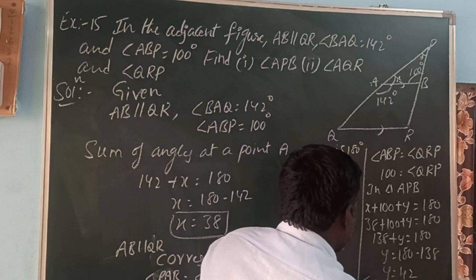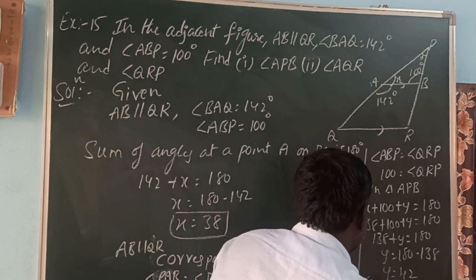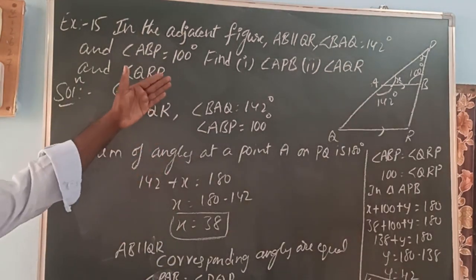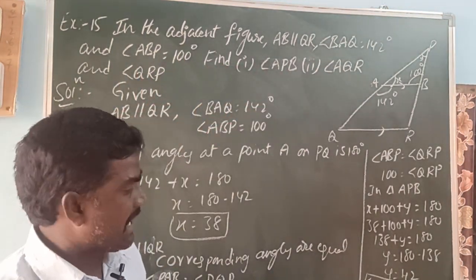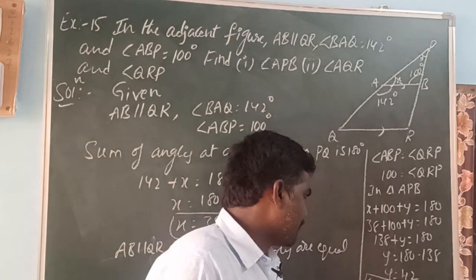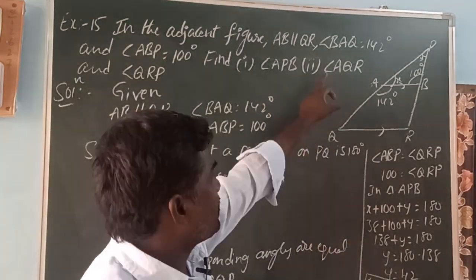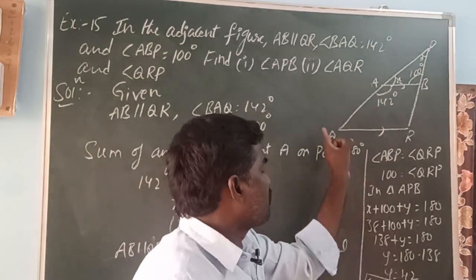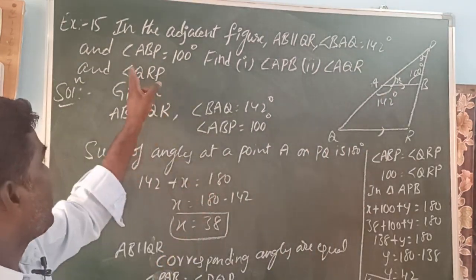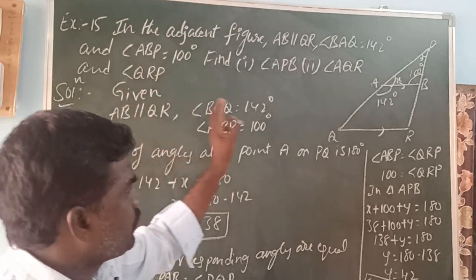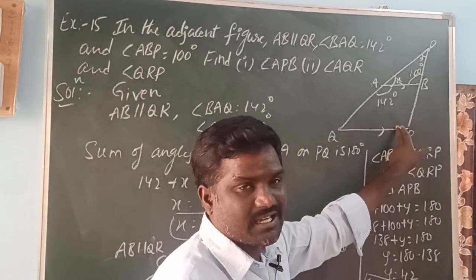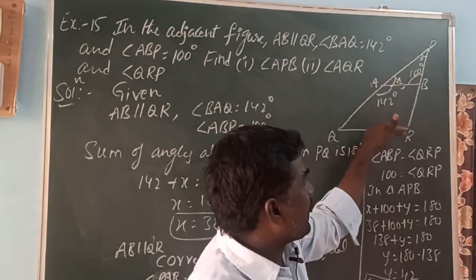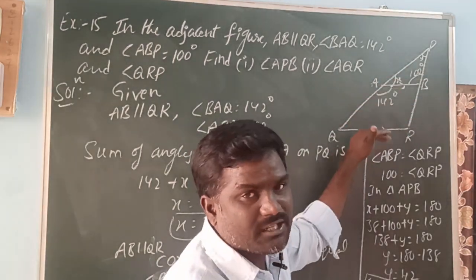Y is nothing but angle QPR, which is equal to 42 degrees. They ask for angle APB, which is the same as angle QPR, so angle APB is 42 degrees. Next, angle AQR: angle PQR is 38 degrees. Angle QRP is 100 degrees, because corresponding angles are equal since AB is parallel to QR.